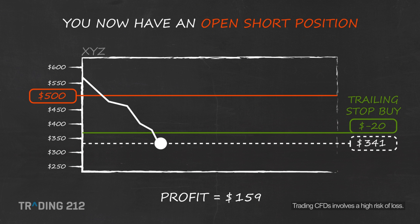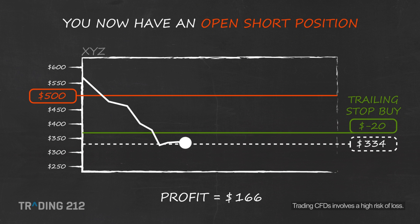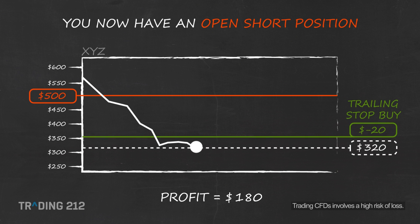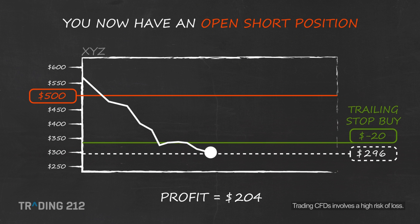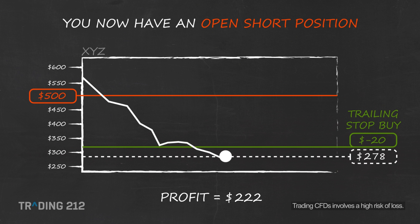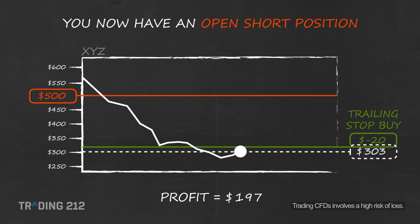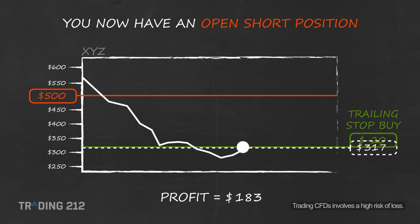As the price decreases, the trailing stop also decreases, keeping its distance of $20 above the current price. Let's say that at $300 the price changes direction and starts to increase. If the price increases until it reaches the trailing stop at $320, a buy order will be triggered at this point.